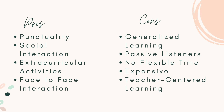Next is extracurricular activities. Formal or traditional education often provides a range of extracurricular activities such as sports, clubs, arts, and community services. These activities allow students to explore their interests beyond the academic curriculum, develop their talents, and build well-rounded personalities. And lastly, face-to-face interaction: traditional education facilitates direct face-to-face interaction between students and teachers, enabling students to ask questions, seek clarification, and engage in discussions, promoting a deeper understanding of the subject matter.